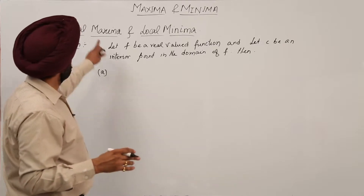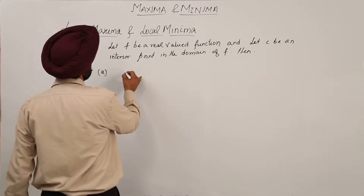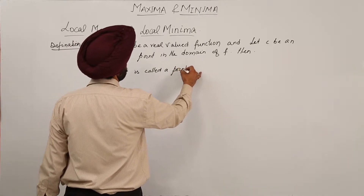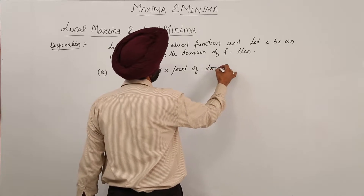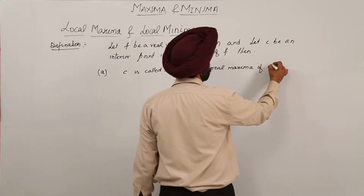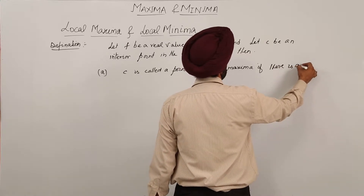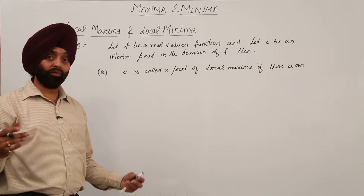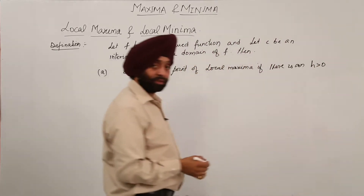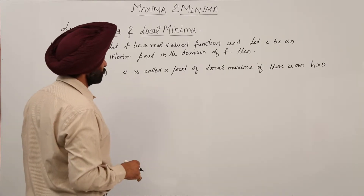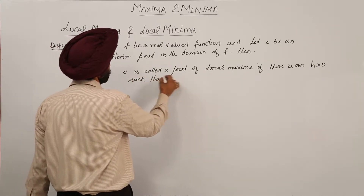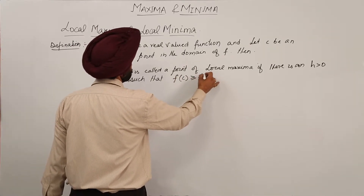We will discuss two things: local maxima and local minima. Number one — c is called a point of local maxima if there is an h greater than 0 such that f(c) is greater than or equal to f(x).